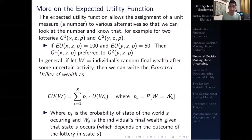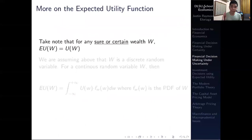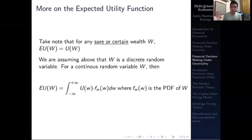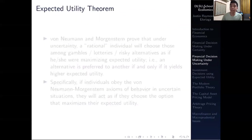Note that for any sure or certain wealth, the expected utility of w is equal to u(w) — if you are certain about w and the probability is equal to one, the expected utility collapses to the utility function. We are assuming above that w is a discrete random variable. For most of the course we deal with a discrete variable, but some problems will involve a continuous random variable. In that case, instead of taking a sum, we take the area under the curve — the integral — and the same concept applies.